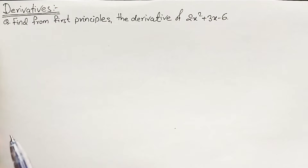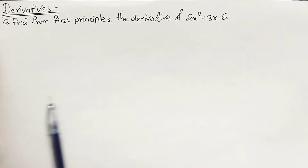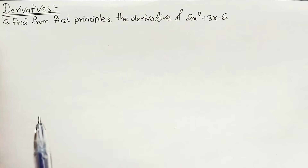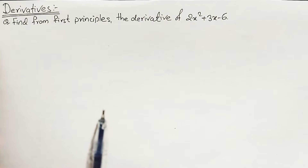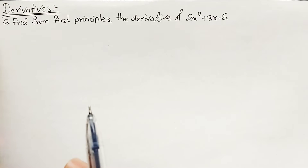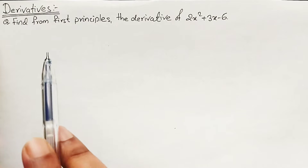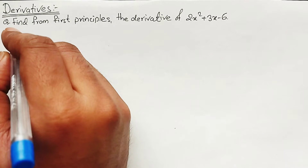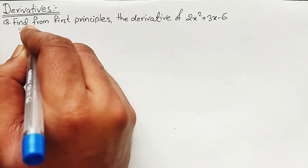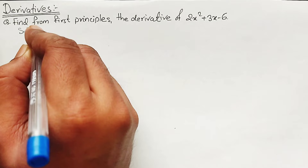While solving any kind of equation based upon the first principle, what we will do is assume some small increment, which we will represent by Delta X and Delta Y in X and Y respectively, to solve any numerical based upon the first principle.